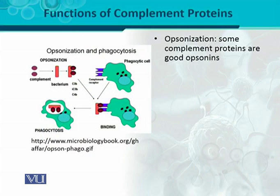An important function of the complement protein is opsonization. Opsonization is a process by which phagocytosis can be increased — when a pathogenic organism enters the body and phagocytes eat more and more of it to kill it. Some complement proteins serve as opsonins, meaning proteins that have the ability to cause the process of opsonization and enhance the phagocytosis process.